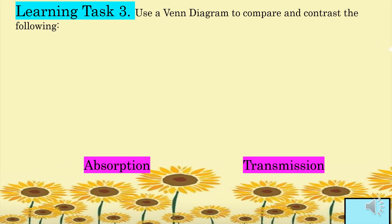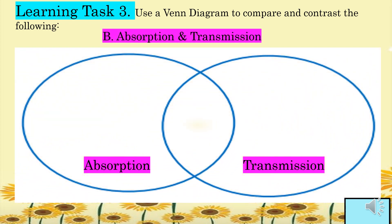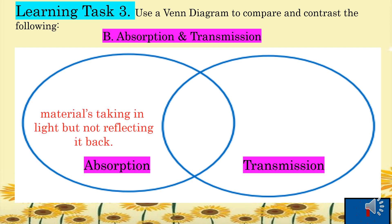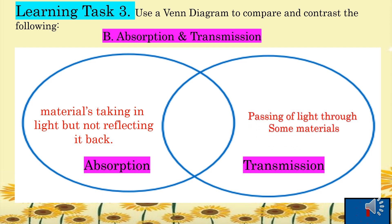For Learning Task 3, letter B, compare and contrast absorption and transmission. For absorption: materials taking in light but not reflecting it back. For transmission: passing of light through some materials. Both are behaviors of light that strike different materials.